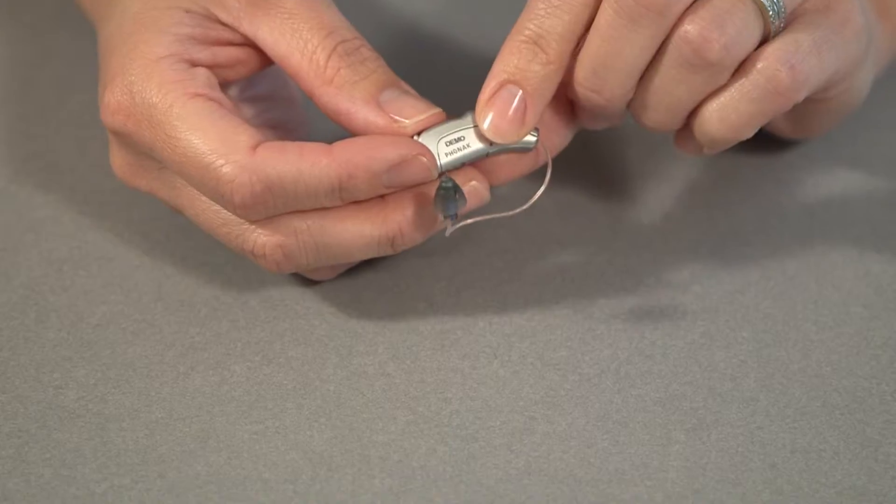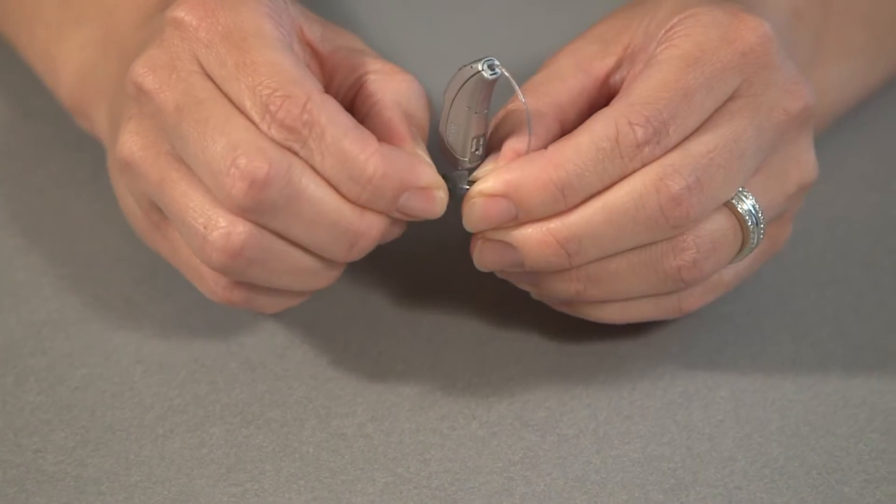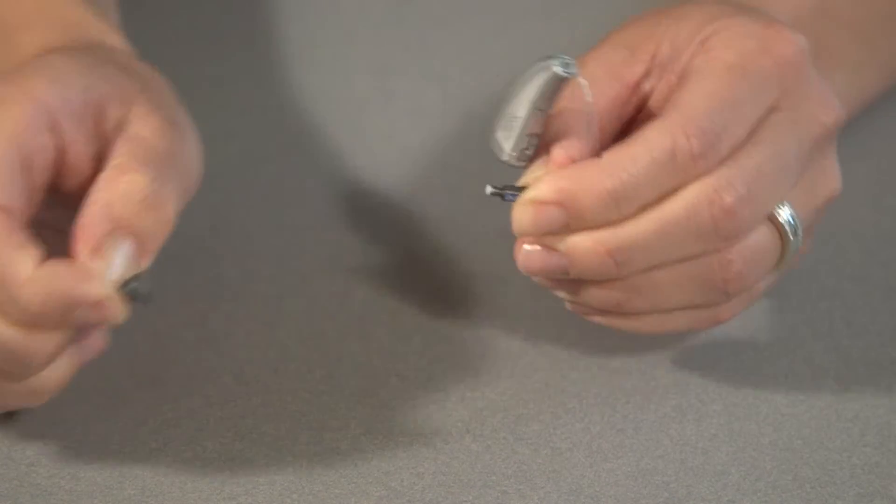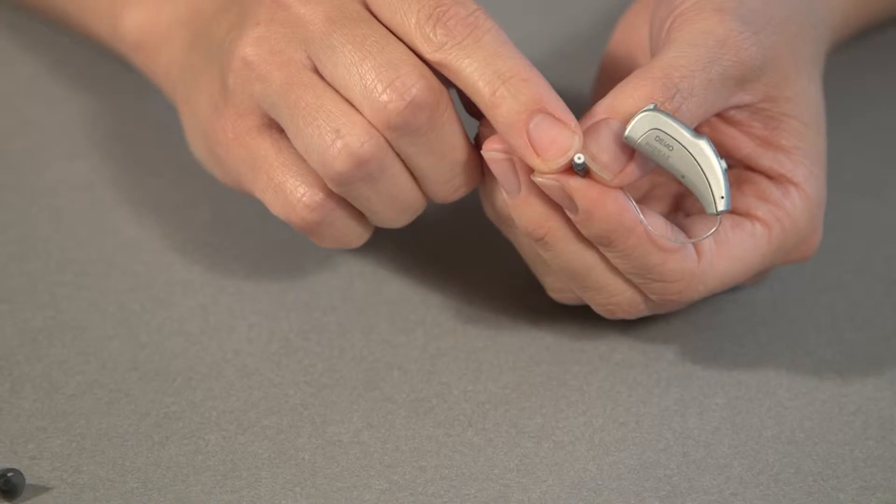And if the hearing aid still seems like it's not working properly, the next thing you want to do is pull the dome off the end just like this and replace the wax trap behind the dome.